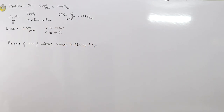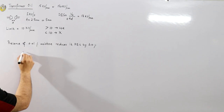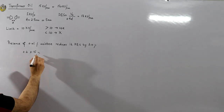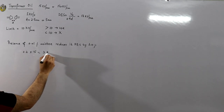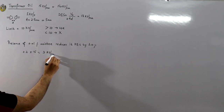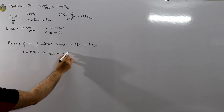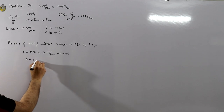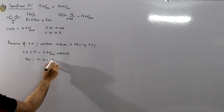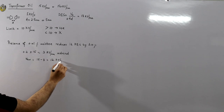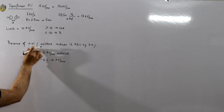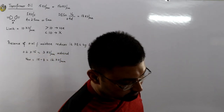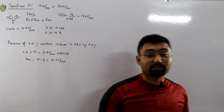For example, 20% of 15 kV/mm is 3 kV/mm. So the new dielectric strength becomes 15 − 3 = 12 kV/mm — just from the presence of 0.01% moisture. This is a significant and problematic reduction.